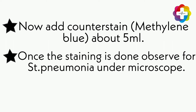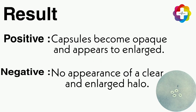Coming to results: if the test is positive, the capsule appears opaque and enlarged, showing an appearance of a clear and enlarged halo around the pneumococcal cells.